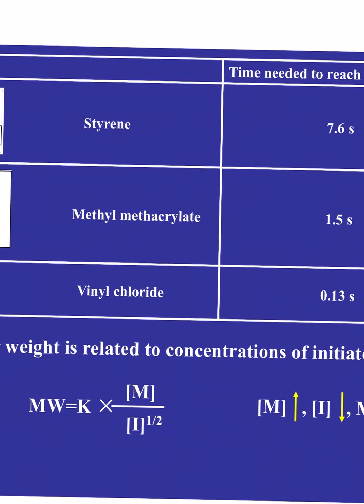Looking at the time needed to reach a molecular weight of 10^6 for styrene under appropriate conditions — about 50°C with a certain catalyst — you can get to 100,000 molecular weight in 7.6 seconds. Methylmethacrylate has this double bond as well; that's 1.5 seconds, even faster. And the champion is vinyl chloride — a double bond with chlorine on it — you can get to 100,000 in 0.13 seconds.